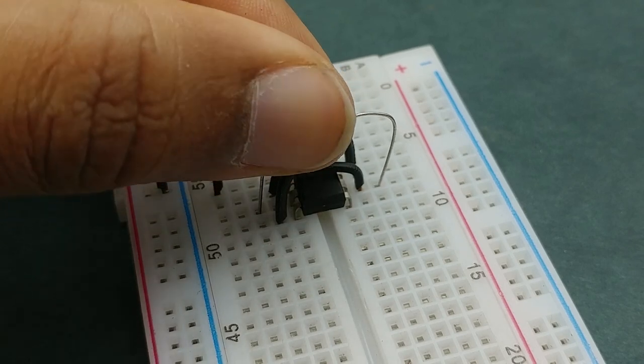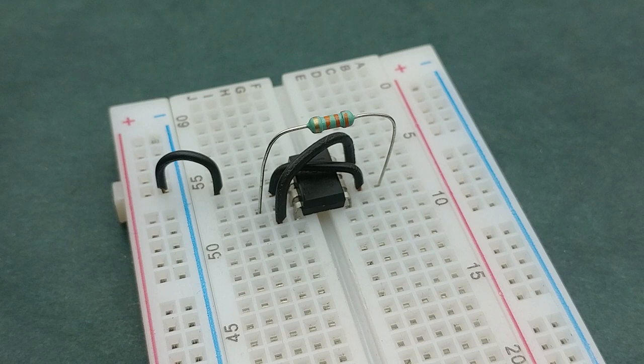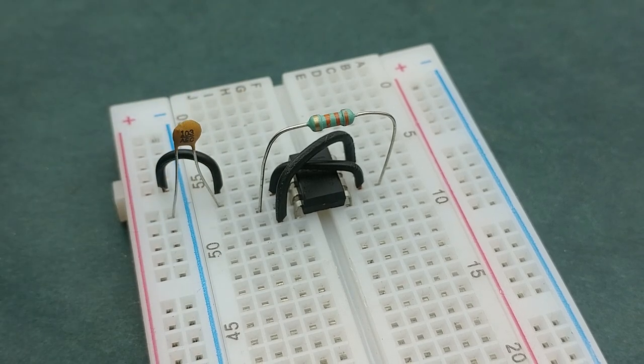Next place a 33 kilo ohm resistor between pin 6 and pin 3 of the triple fire timer IC and then place a 0.01 microfarad capacitor between pin 2 and negative rail.